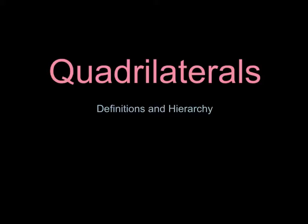A Google search for a hierarchy definition gives: a system or organization in which people or groups are ranked one above the other according to status or authority. In this case, it'll mean things like all rectangles are quadrilaterals, even though not all quadrilaterals are rectangles. So we'll make a little chart out of them.